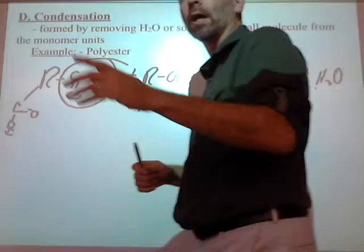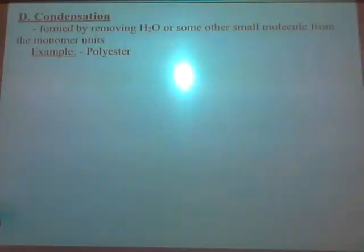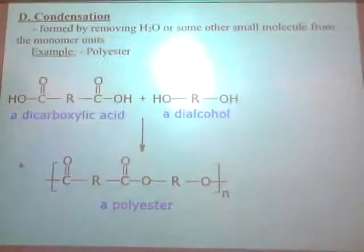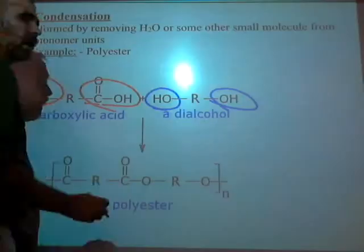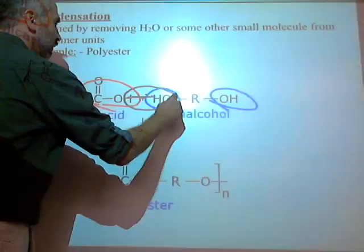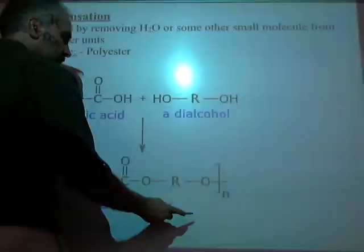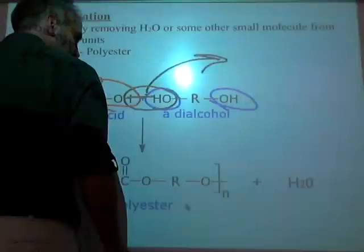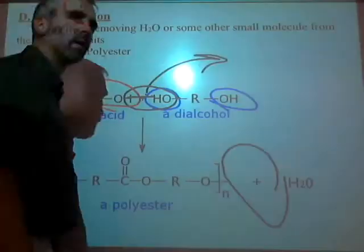That reaction on your paper shows it: you take your R group with a carboxylic acid on both sides, and an alcohol on both sides. When they join, they split off HOH and form the ester linkage, but there's still a reactive end on each side — so another alcohol can add here and another acid there, and it just keeps growing. That's what makes it polyester. You take a dicarboxylic acid and a dialcohol and make polyester.